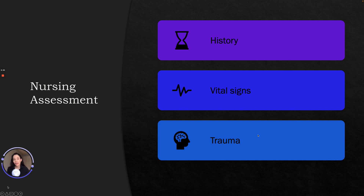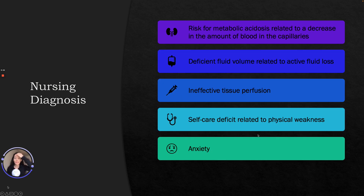Our nursing assessment will include a patient history to determine possible causes, then vital signs — blood pressure, heart rate, and so on. We also want to assess any signs of trauma to determine the mechanism of injury. Nursing diagnoses can include risk for metabolic acidosis related to decreased blood in the capillaries, deficient fluid volume related to active fluid loss, ineffective tissue perfusion, and self-care deficit related to physical weakness and anxiety.